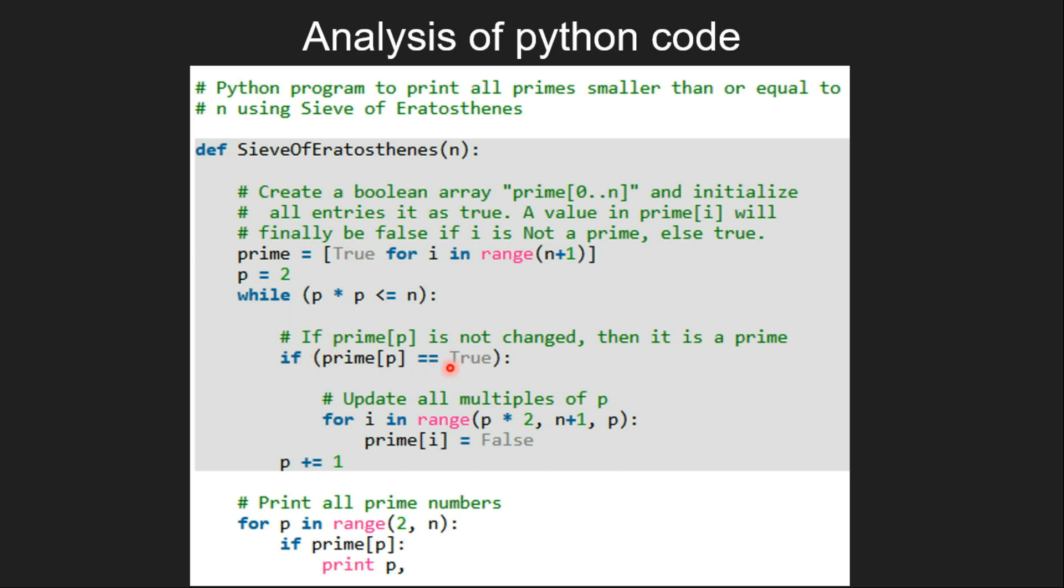then the boolean array will be set to false. And inside the for loop, we check for each index value of the boolean array if it is prime or not, using an if condition.